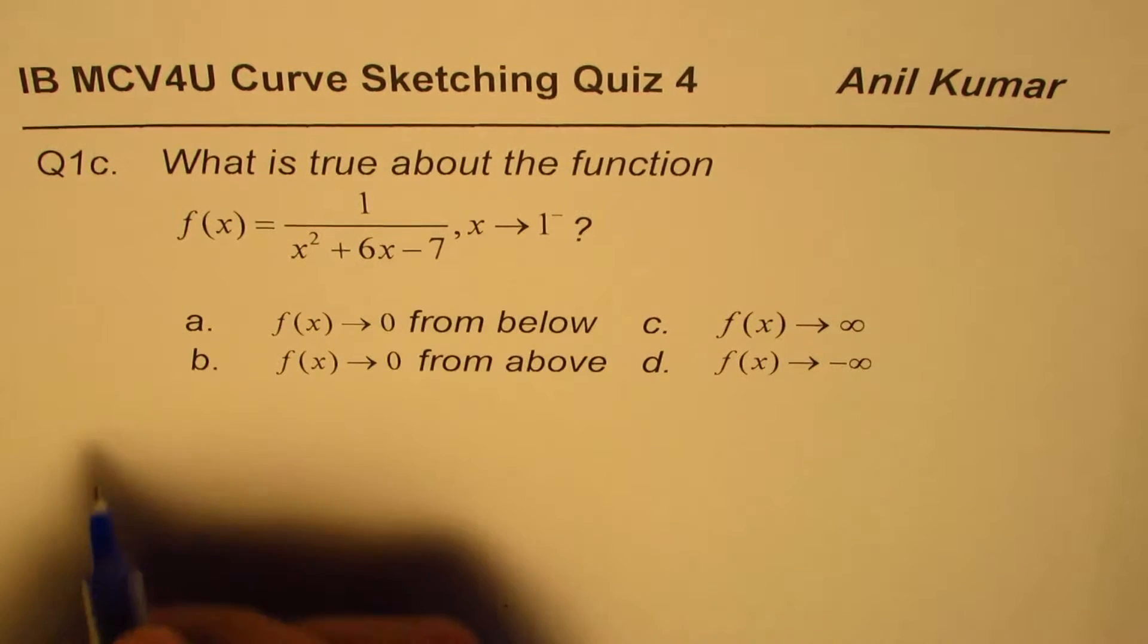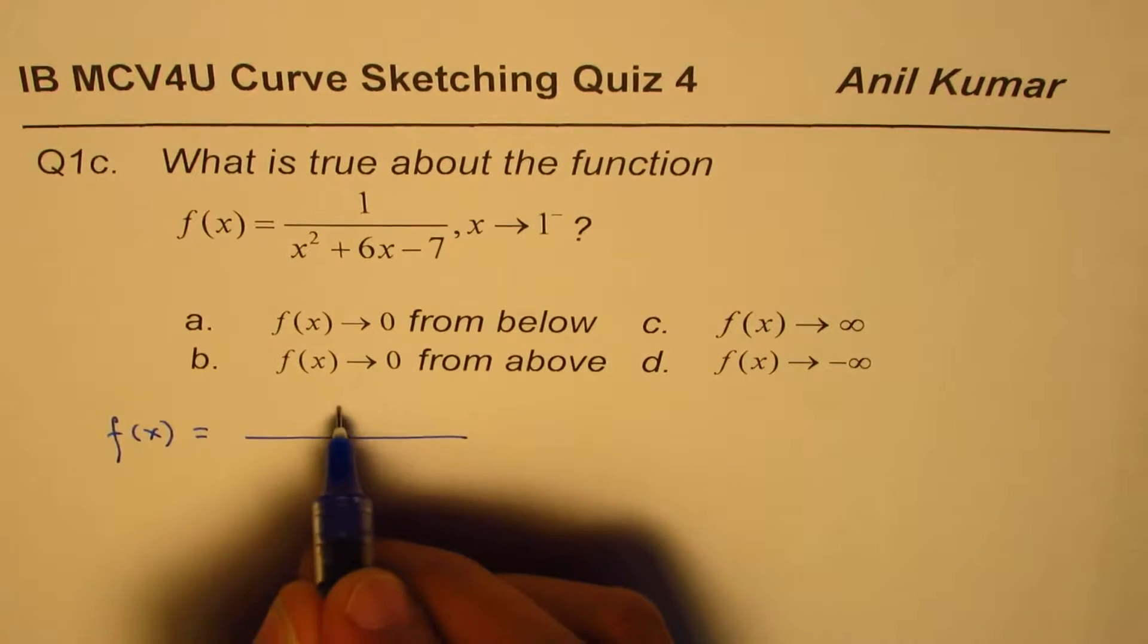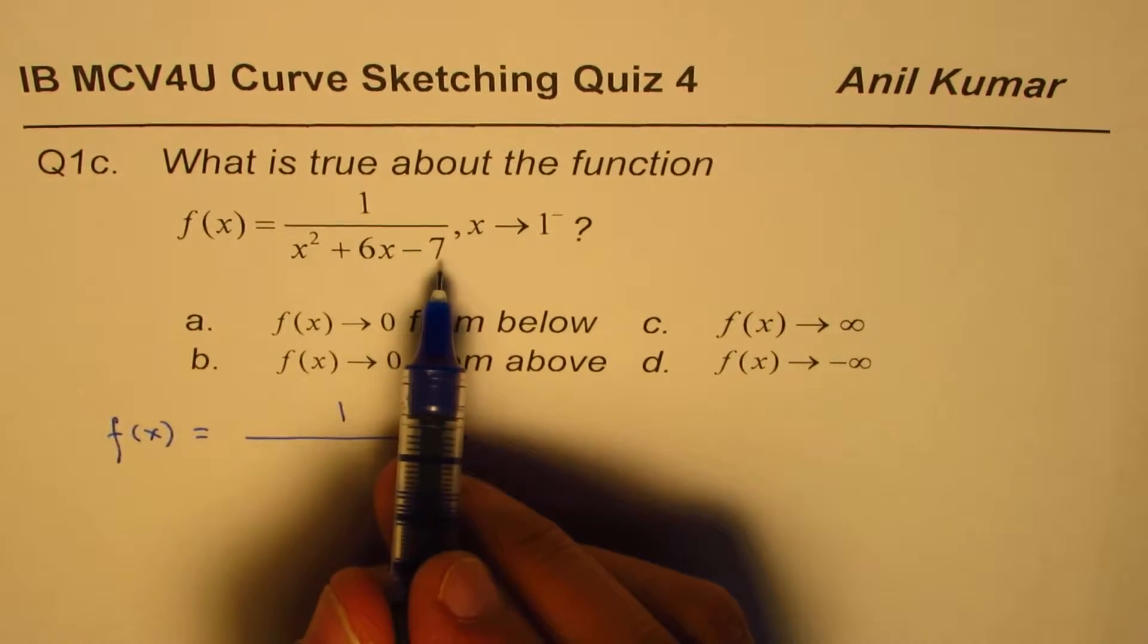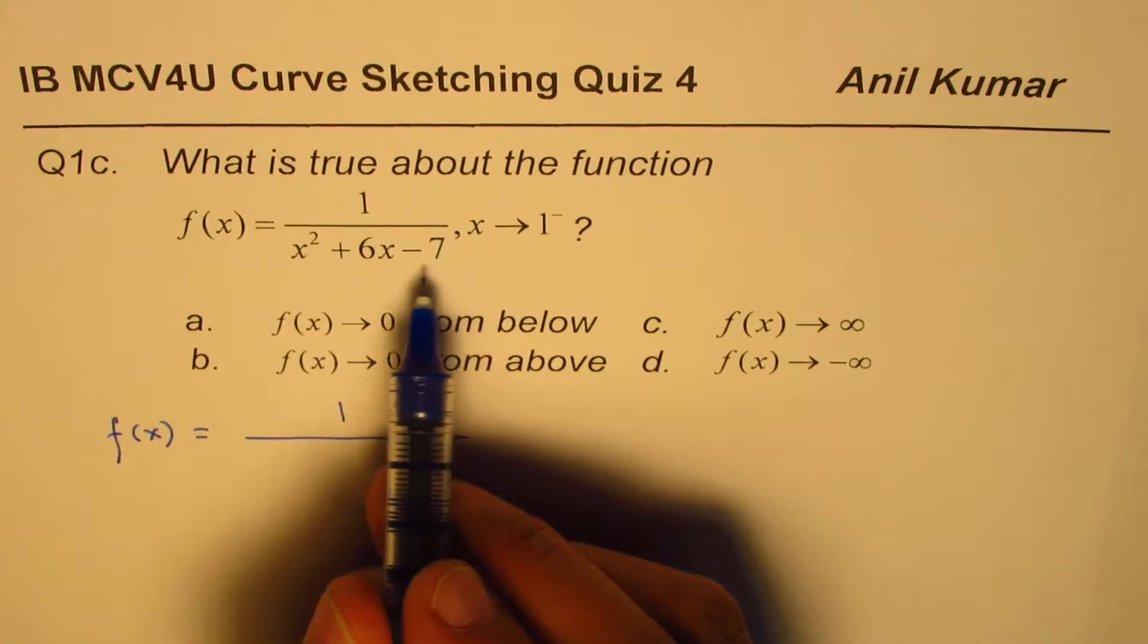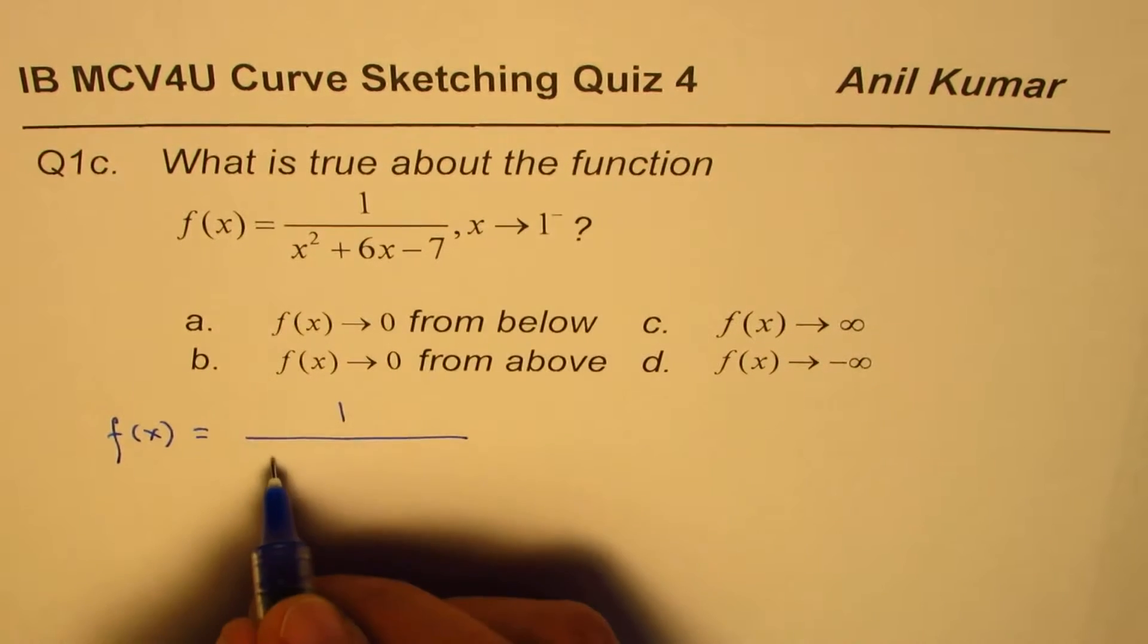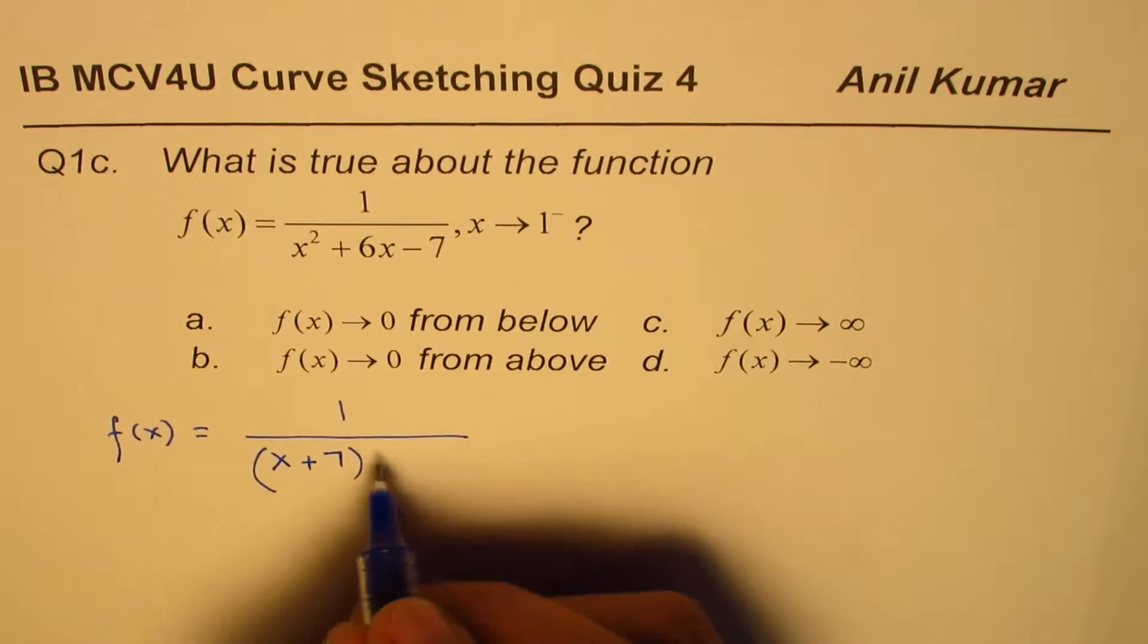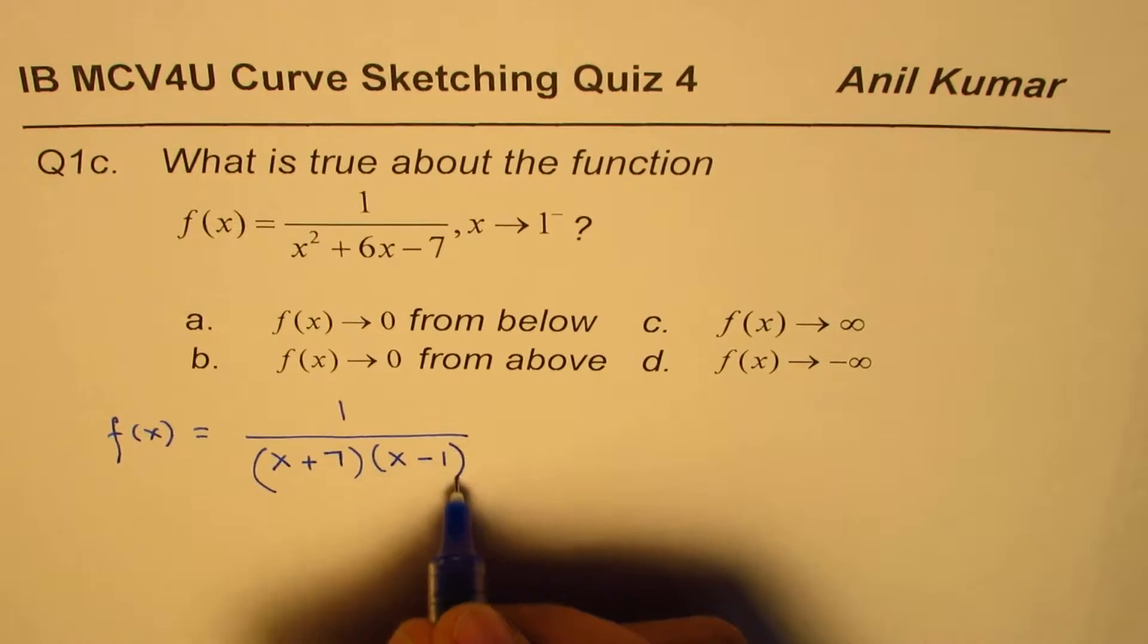Now, let us factor the denominator to really understand the function. So, f(x) equals 1 over quadratic equation. We are looking for sum of 6 and product of minus 7, that is 7 times minus 1. So, we could factor this as (x + 7) times (x - 1). That is now the function for us.